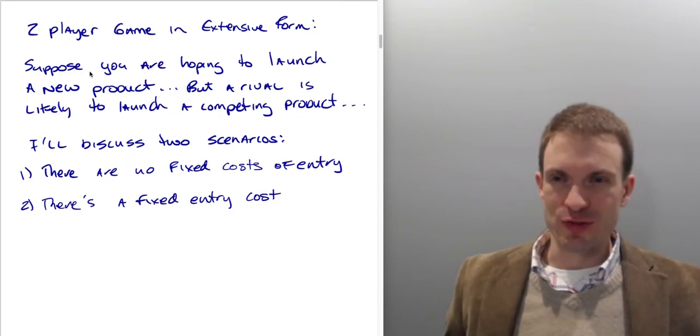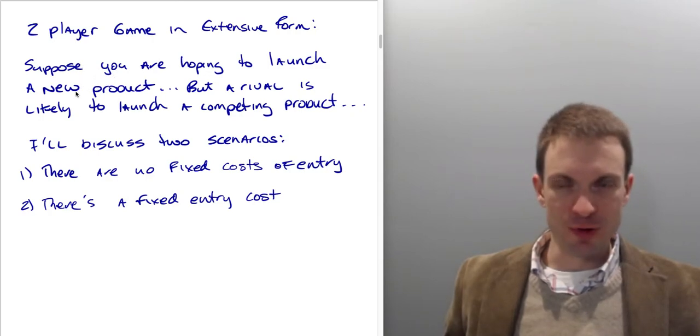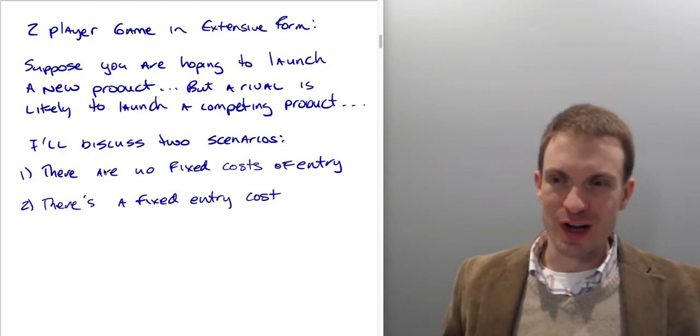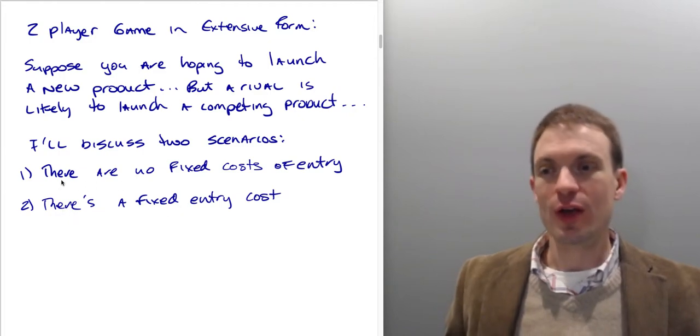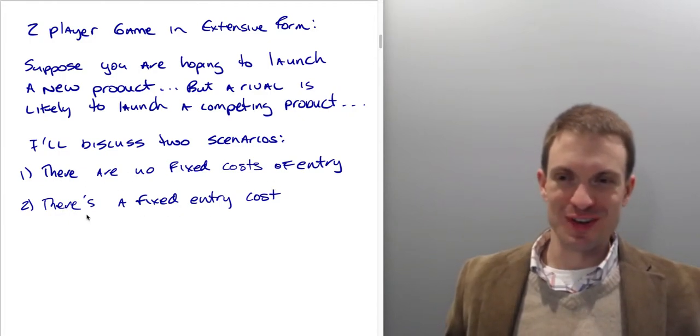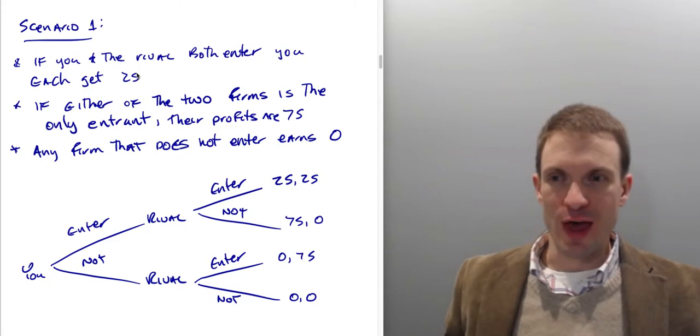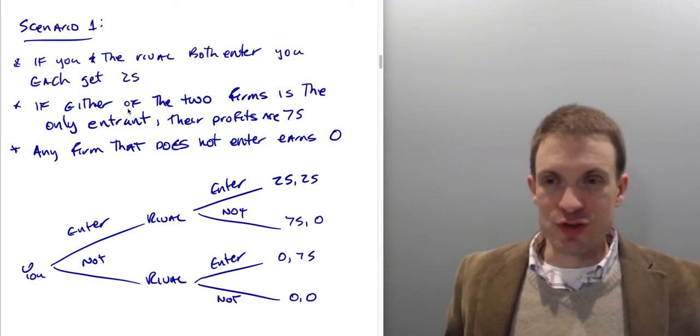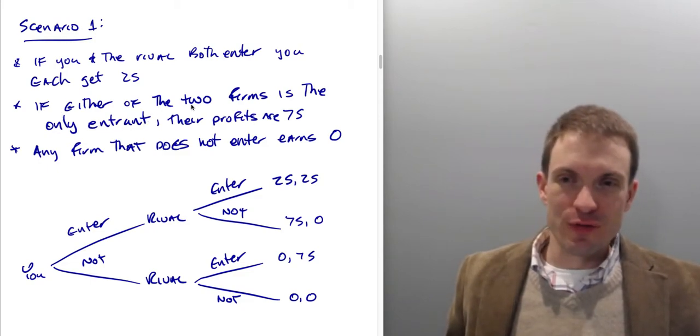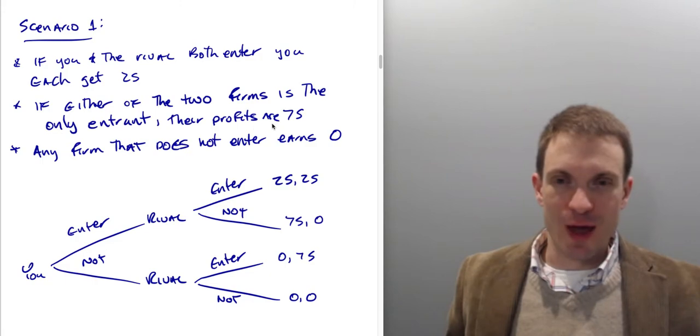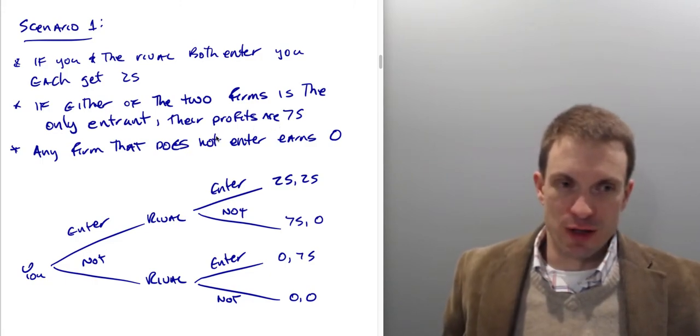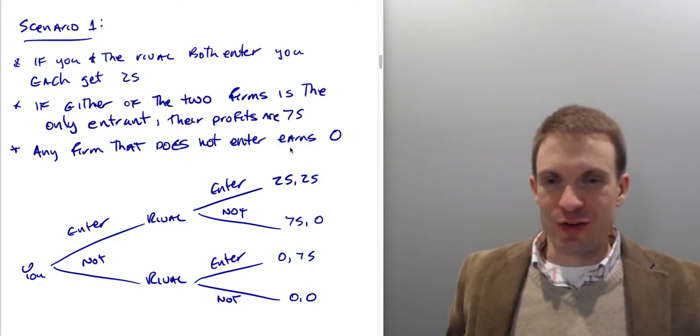So here is a two-player game in extensive form. For an example, suppose you are hoping to launch a new product, but a rival is likely to launch a competing product. We'll think of two scenarios, one where there's fixed cost of entry and another where there's no fixed cost of entry.